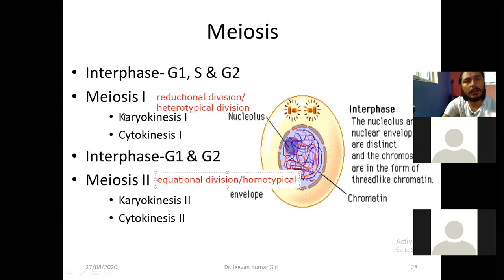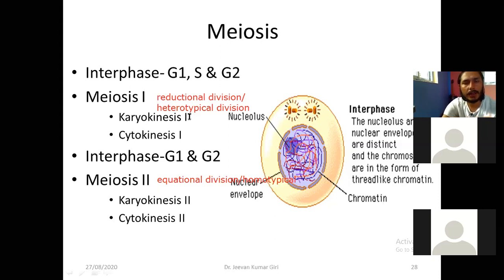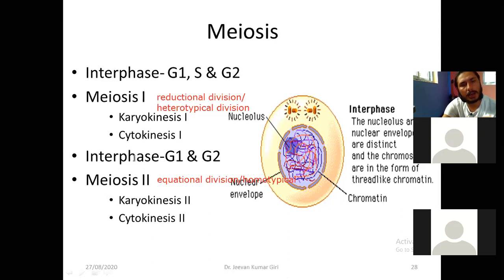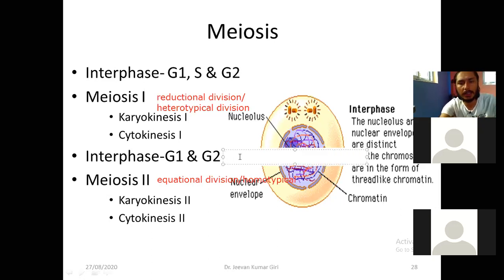Meiosis second is the homotypical division — the mother cells and daughter cells have the same number of chromosomes. Reduction occurs only in meiosis first. In meiosis there is division of the nucleus and division of the cytoplasm and its organelles — karyokinesis and cytokinesis. After first meiosis division there is a short interphase between meiosis first and meiosis second, called interkinesis.